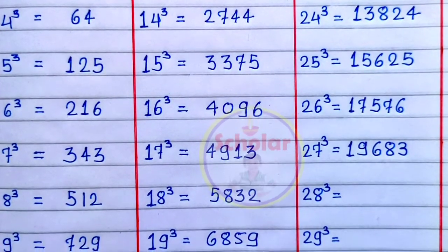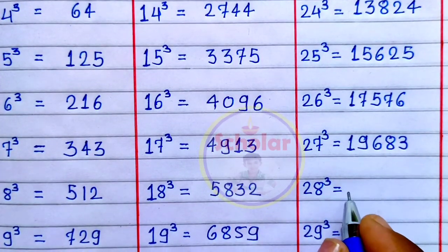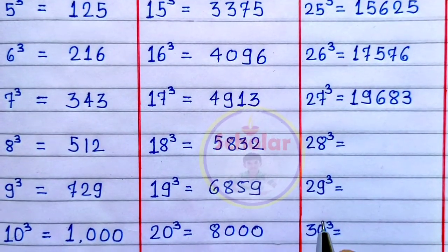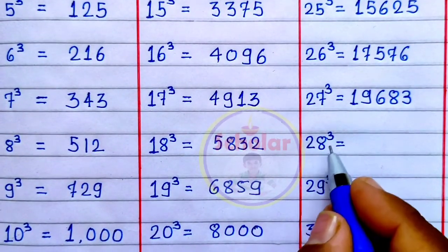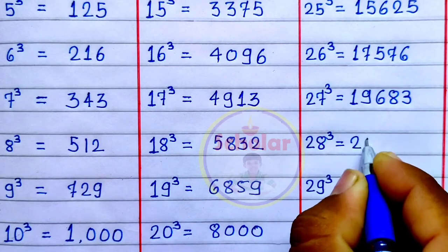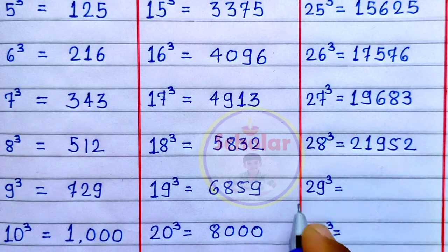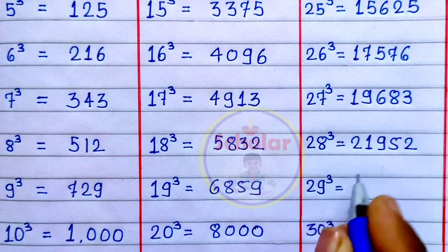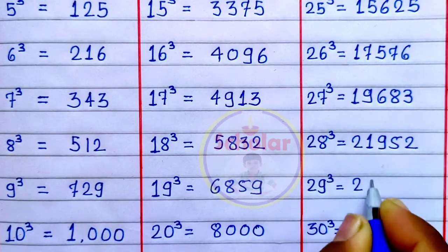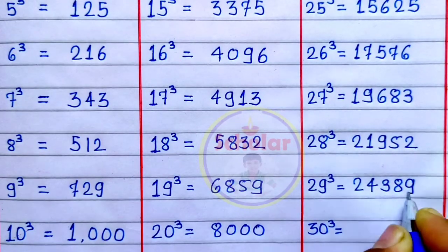Cube of 28 is 21952. Cube of 29 is 24389.